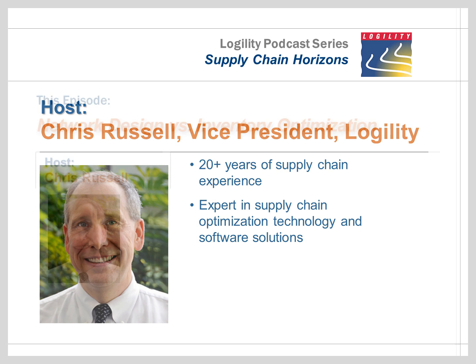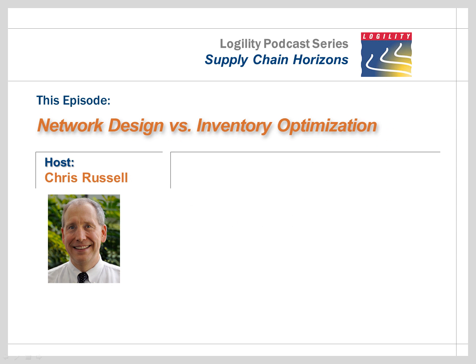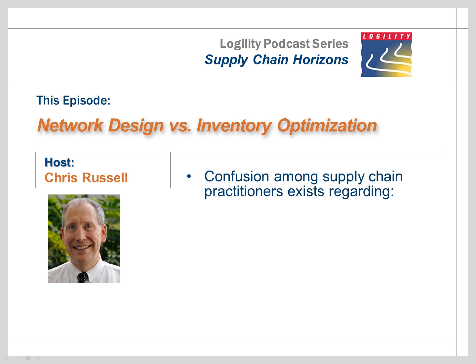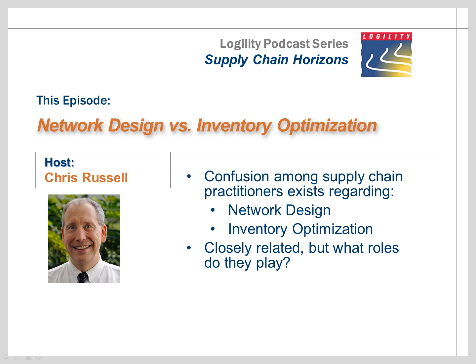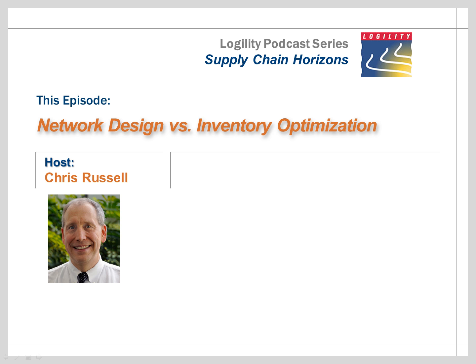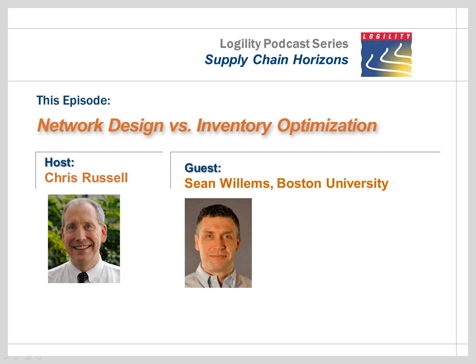As I travel around and speak to supply chain managers, planners, and senior executives, it's clear that there's some confusion regarding the relationship between network design and inventory optimization — two disciplines that are closely related in some ways, but ultimately play very different roles in the modern supply chain. Today, we are going to hopefully clear all that up with help from a very special guest, inventory optimization pioneer and supply chain guru, Dr. Sean Willems.